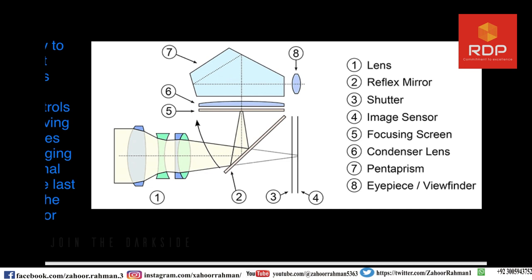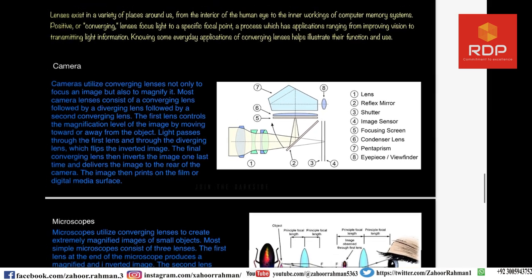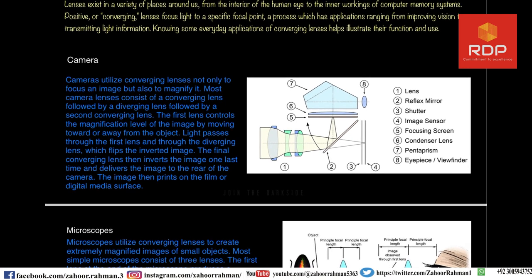The second component is the reflex mirror. When the image reaches this mirror, which is at about 45 degrees, it is directed towards a pentaprism. In the figure, level 5 is the focusing screen, 6 is the condenser lens, and 7 is the pentaprism. After passing through the pentaprism, it is directed to number 8, which is the eyepiece.